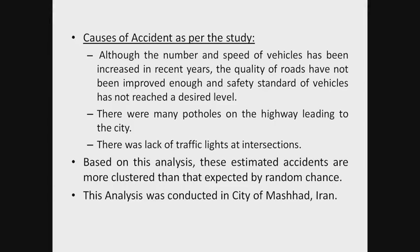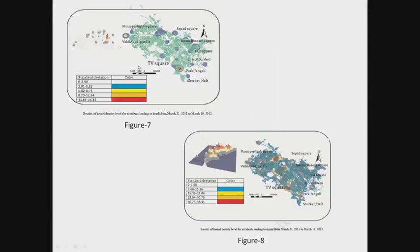The analysis was conducted in the city of Mashhad, Iran. The images show the kernel density results for fatal accidents from March 21, 2011 to March 19, 2012 — a span of one year. Major hotspots and clustered accident locations are clearly visible. A separate kernel density map shows accidents leading to injury rather than death, with one map representing fatal accidents and another representing injury-causing accidents. The comparison shows that certain areas had more injury accidents while others had more fatal accidents.